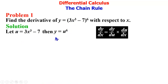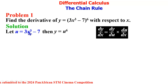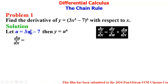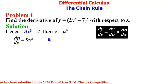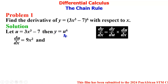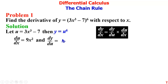We differentiate u with respect to x and also differentiate y with respect to u. Differentiating u with respect to x: du/dx = 3 × 3 = 9, then we reduce the power by 1, giving 9x². The derivative of a constant is 0, so our final answer for du/dx is 9x². For y = u⁶, we find dy/du.